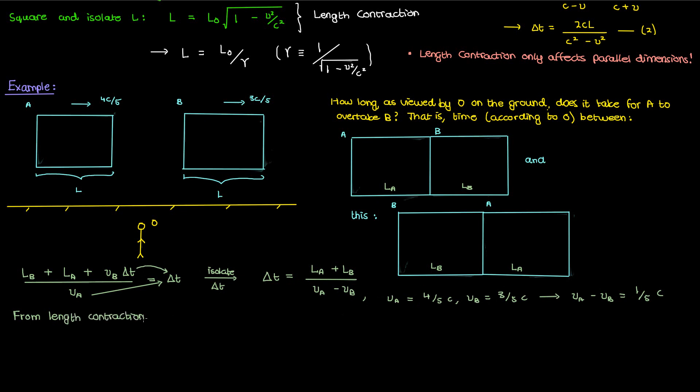Meanwhile L sub A and L sub B can be calculated using the length contraction equation where LA is the proper train length L times the square root of 1 minus VA squared over C squared. When we calculate this out we'll find that LA is just three-fifths L and similarly when we calculate the length LB in O's reference frame we'll find that it comes out to four-fifths L.